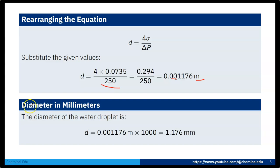Now if we convert diameter to millimeters, the diameter of the water droplet is 0.001176 meter times 1000, which gives 1.176 millimeters. So diameter of the water droplet is 1.176 millimeters.